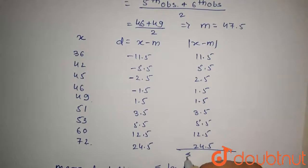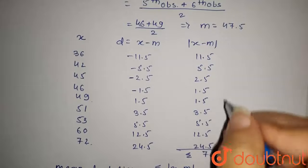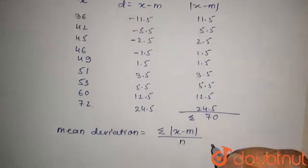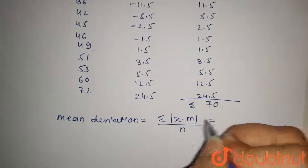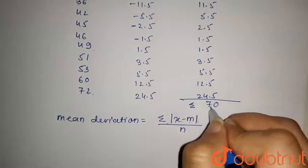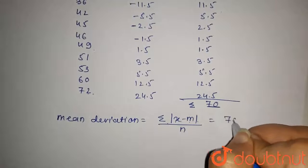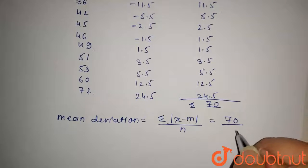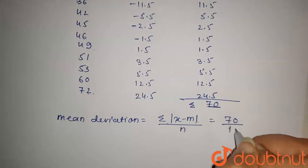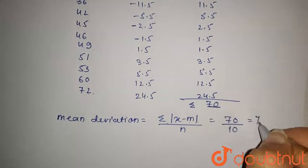Now the summation of this will be 70. On adding these observations we get 70. So this will be summation of x minus m that is 70, upon number of observations. Number of observations are 10. So 70 upon 10 which is equal to 7.